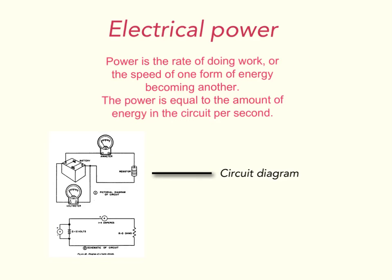Electrical power. Power is the rate of doing work, or the speed of one form of energy becoming another. The power is equal to the amount of energy in the circuit per second.